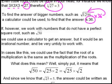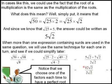So in cases like this we could use the fact that the root of a multiplication is the same as the multiplication of the roots. What does this mean? Well simply put it means that if we take the square root of 50, we can say 50 is equal to 25 times 2.